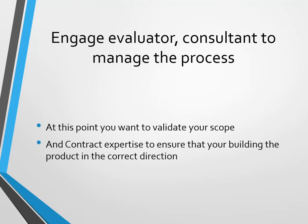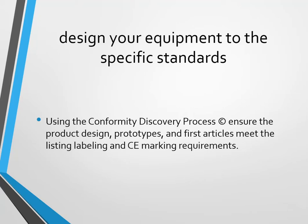At that point you want to contract expertise to ensure that you're building the product in the correct direction towards those standards. You may have someone on your team already who's a product safety person — that's their main role in your company. Or you might not. We deal with this across a lot of companies, from startups to Fortune 100, and often it's best to either contract somebody or have somebody full-time on that. Our process is called the conformity discovery process, and that ensures that your product design, prototypes, and first articles meet the listing, labeling, and CE marking requirements as designed. You can use a similar process — checklists, ongoing product design reviews — that'll allow you to know for sure your product is meeting the standards as you design and build it.